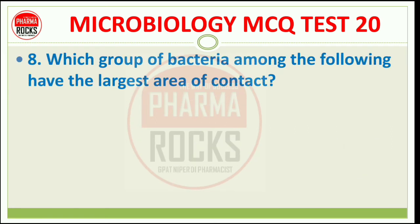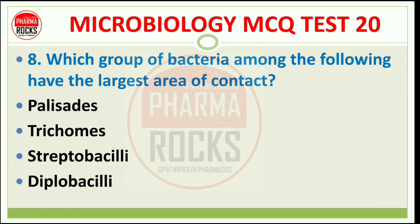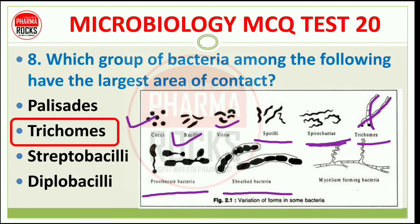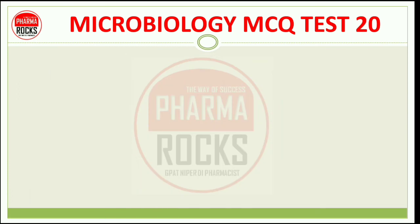Question number 8: Which group of bacteria among the following has the largest area of contact? Options: Palisades, Trichomes, Streptobacilli, or Diplobacilli. The question is: largest area of contact कौन से bacteria के अंदर होता है? The answer is Trichomes. Bacteria shapes include: cocci (spherical), bacilli (rod), vibrio (comma-shaped), spirilla (spiral), spirochetes (flexible spiral). Trichomes form long chains with the largest area of contact.